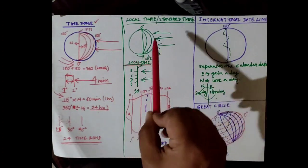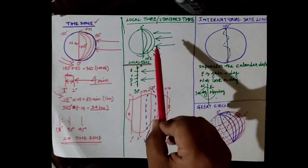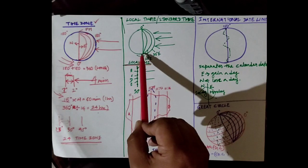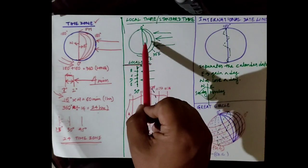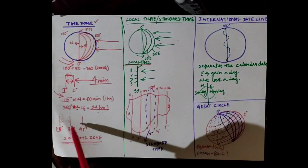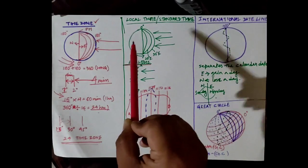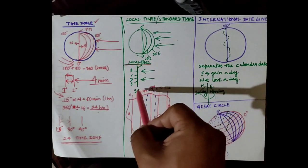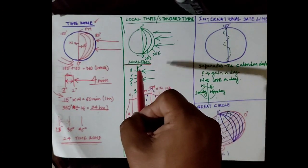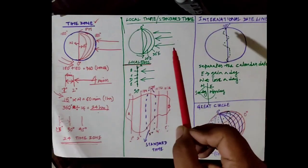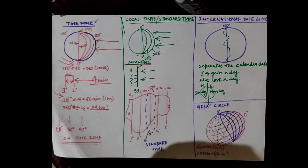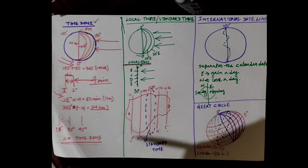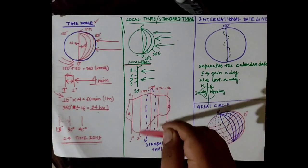Next is local time and standard time. As the earth rotates from west to east, each meridian will have different timings. For example, 30 degrees is now facing the sun; as earth rotates, 20 degrees comes to that place, and then 10 degrees. All places on the same meridian will have the same time, known as sun time or local time, while different meridians will have different times.